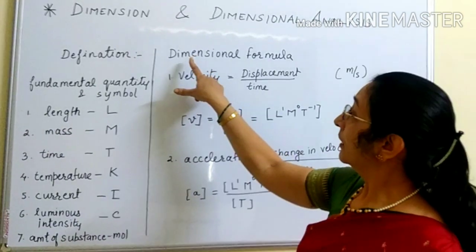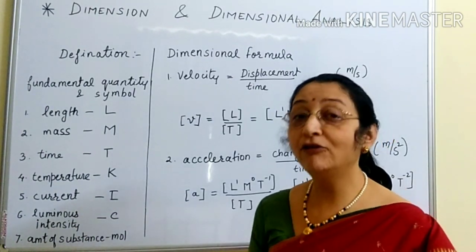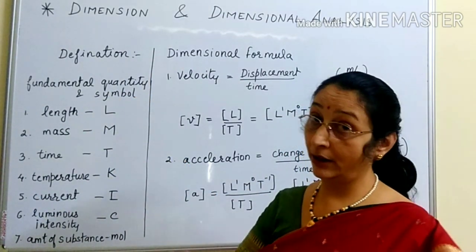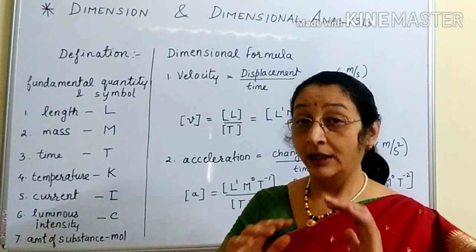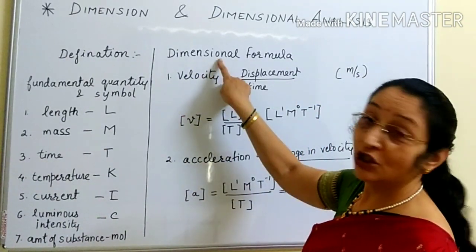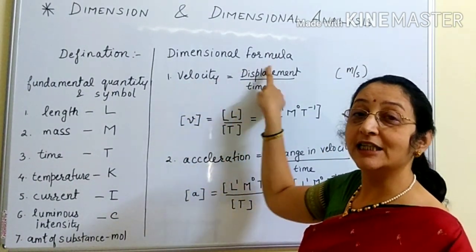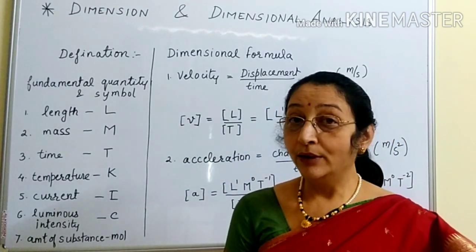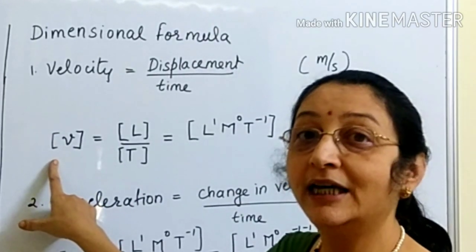Now we are going to write the dimensional formula for various derived quantities. We know that derived quantities depend upon the fundamental quantities and derived units depend upon the fundamental units. So we will be writing the dimensional formula for velocity. We know that velocity is displacement upon time, and the SI unit of velocity is meter per second.